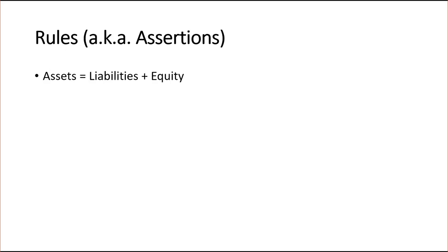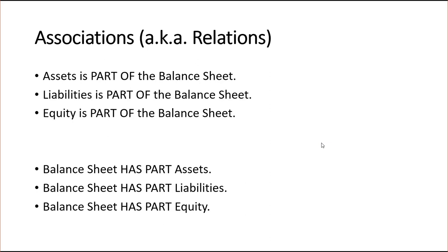We have one rule: assets equals liabilities plus equity. That's the accounting equation — you can't really dispute that, it's the rule. For associations: assets is part of the balance sheet, liabilities is part of the balance sheet, equity is part of the balance sheet. You can look at it the other way around: balance sheet has the part assets, has the part liabilities, has the part equity. Either way, it's the same thing.